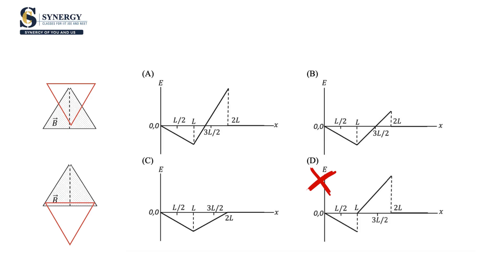Now look at the final diagram when the base of the upper triangular loop is exiting the magnetic field. There is an EMF till the last moment because the longer base is crossing through the magnetic field region. So my final electromagnetic induced EMF cannot be zero. It should be something. That's why option 3 is also wrong.